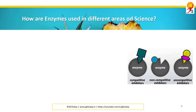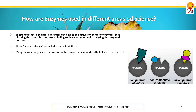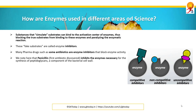How are enzymes used in different areas of science? Substances that simulate substrates can bind to the activation center of enzymes, blocking the true substrates from binding and paralyzing the enzymatic reaction. These fake substrates are called enzyme inhibitors. Many pharma drugs, such as some antibiotics, are enzyme inhibitors that block enzyme activity. Penicillin inhibits the enzyme necessary for the synthesis of peptidoglycans, a component of the bacterial cell wall.